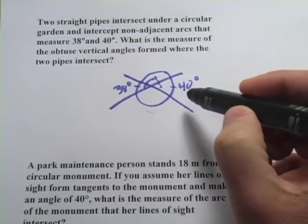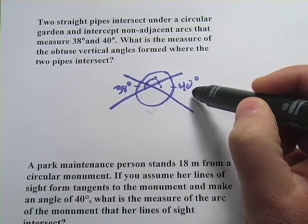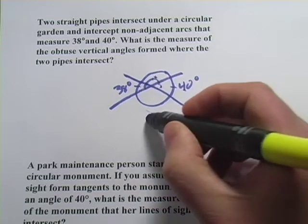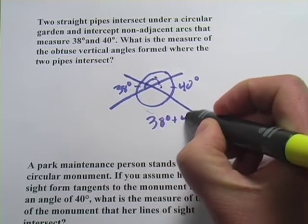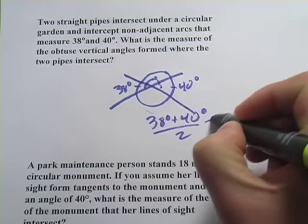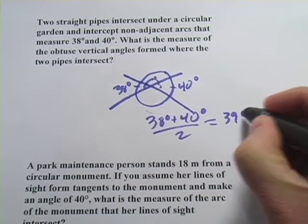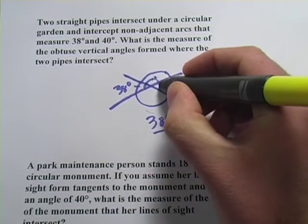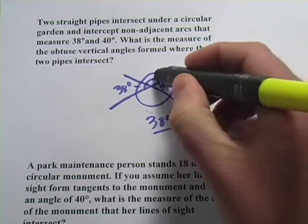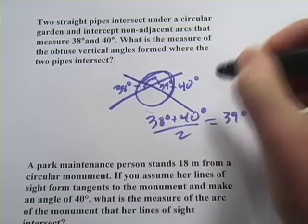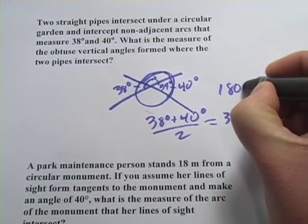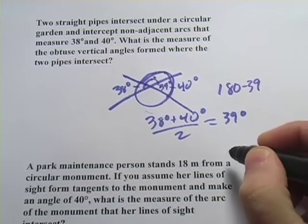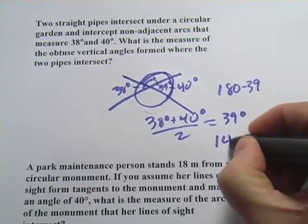The way to find a small angle is to take the average of the two intercepted arcs. So this would be 38 degrees plus 40 degrees divided by 2. That's 39 degrees. If I want to find this angle over here, this linear pair, it's just going to be 180 minus 39 which is 141 degrees.